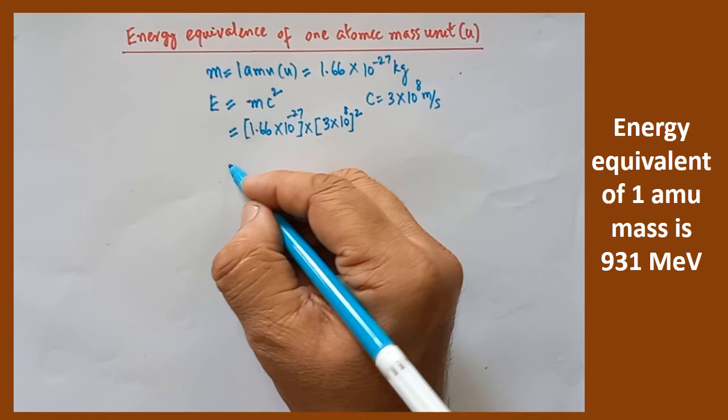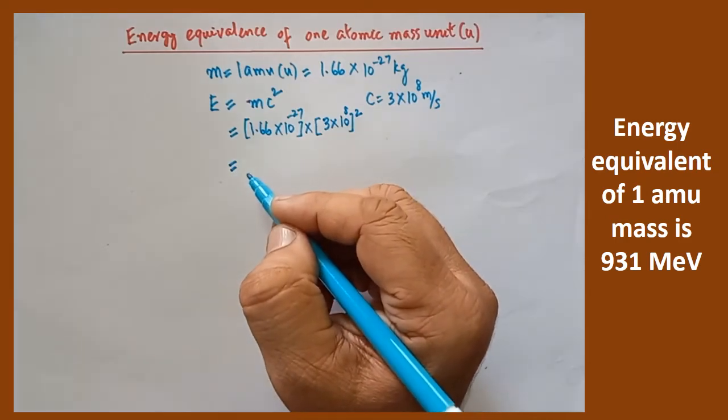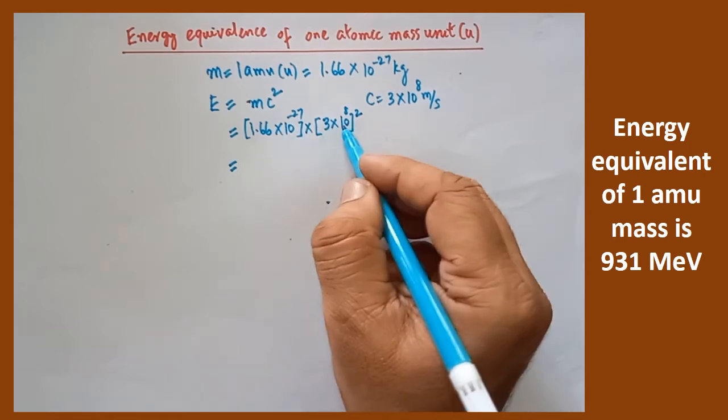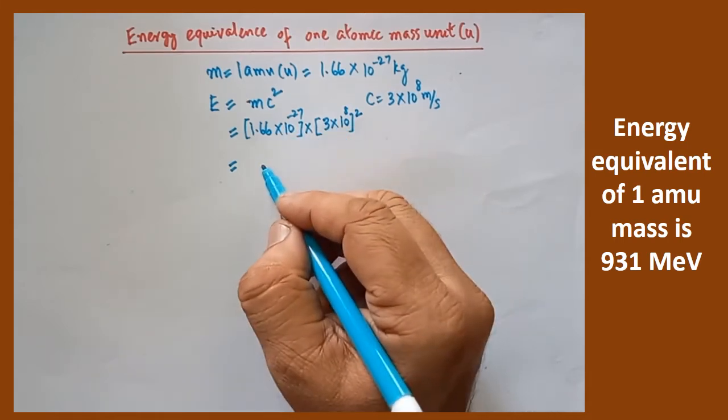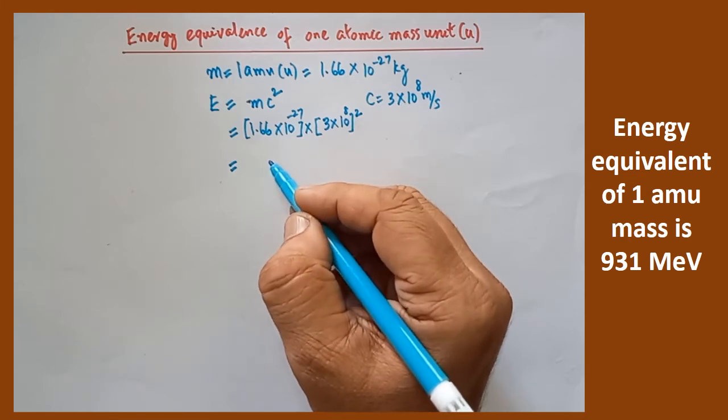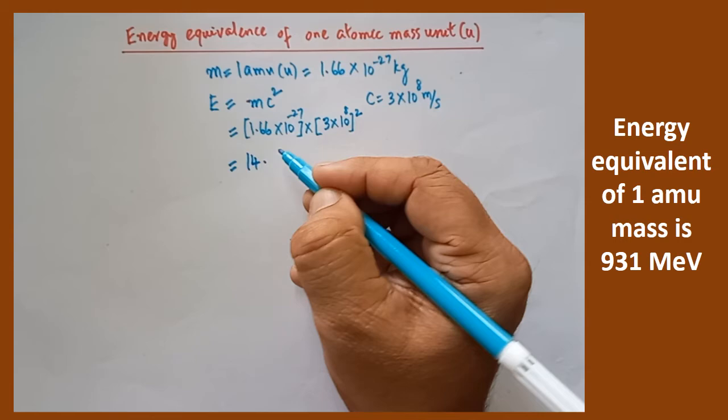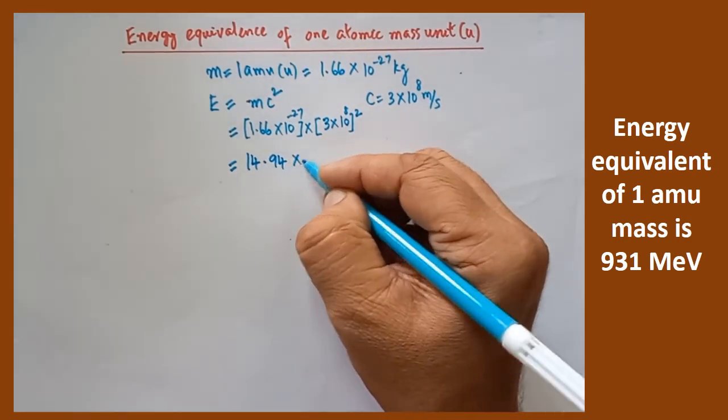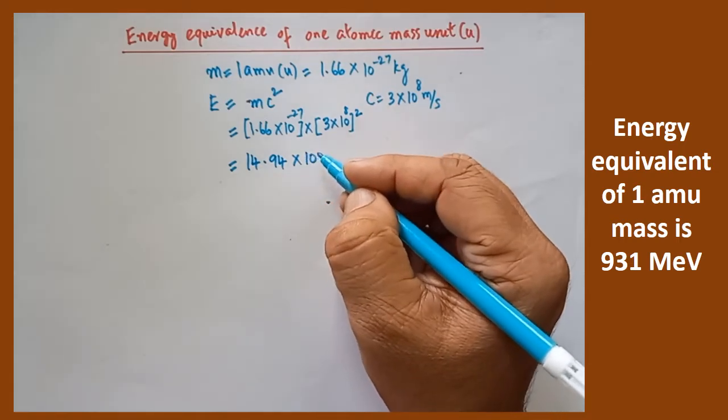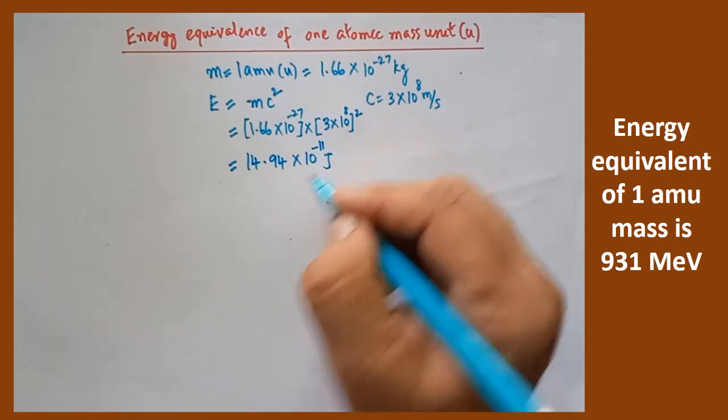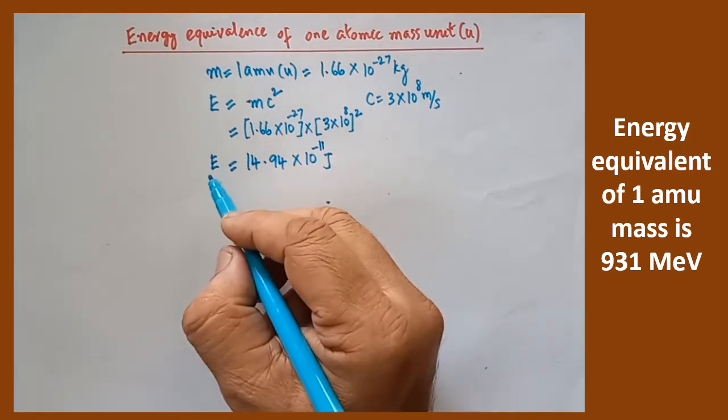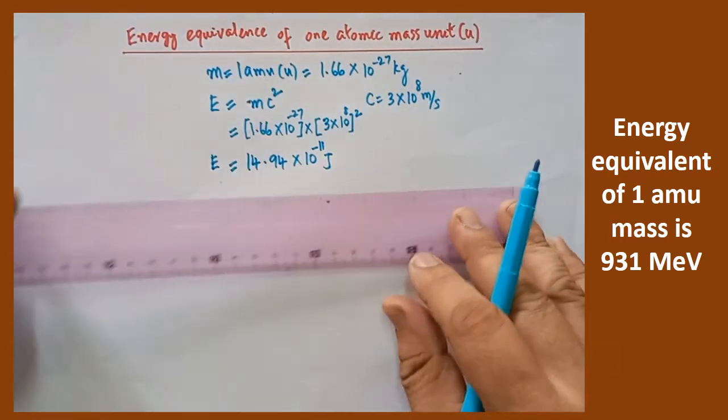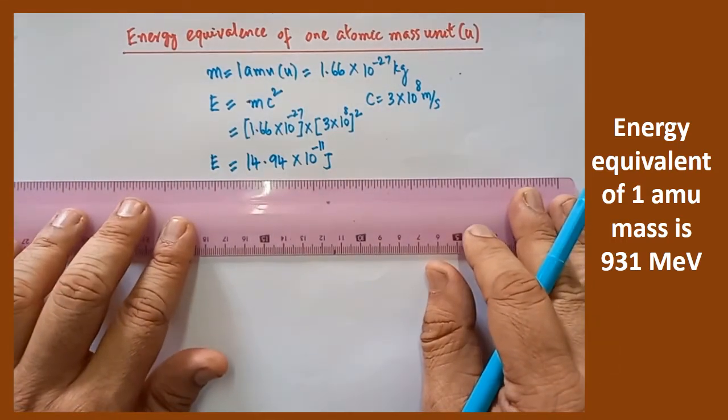If both are multiplied and calculated, you will get the answer in terms of Joule. Because both are in the SI system, the energy what you obtain in this step will also be in terms of SI system, that is in Joules. 14.94 into 10 to the power of minus 11 Joules you will get. So this is the energy equivalence of one atomic mass unit in terms of Joules. So first we have calculated the energy in terms of Joules.